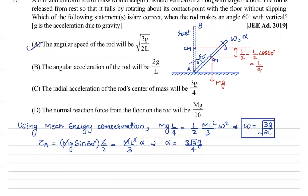For the radial acceleration of the center of mass: a_r = r·ω² = (l/2)·(3g/2l) = 3g/4. So option C is correct.